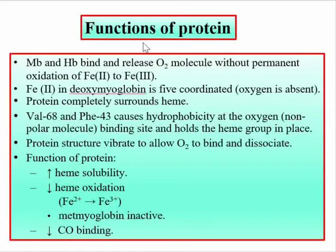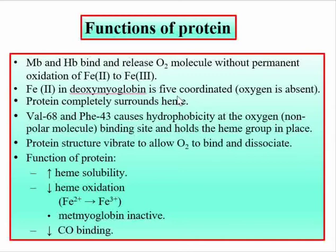The globin protein allows myoglobin and hemoglobin to bind and release oxygen without permanent oxidation of Fe2+ to Fe3+. In deoxymyoglobin, Fe2+ is five-coordinated with oxygen absent. The protein completely surrounds the heme and protects against complete oxidation of Fe2+ to Fe3+.